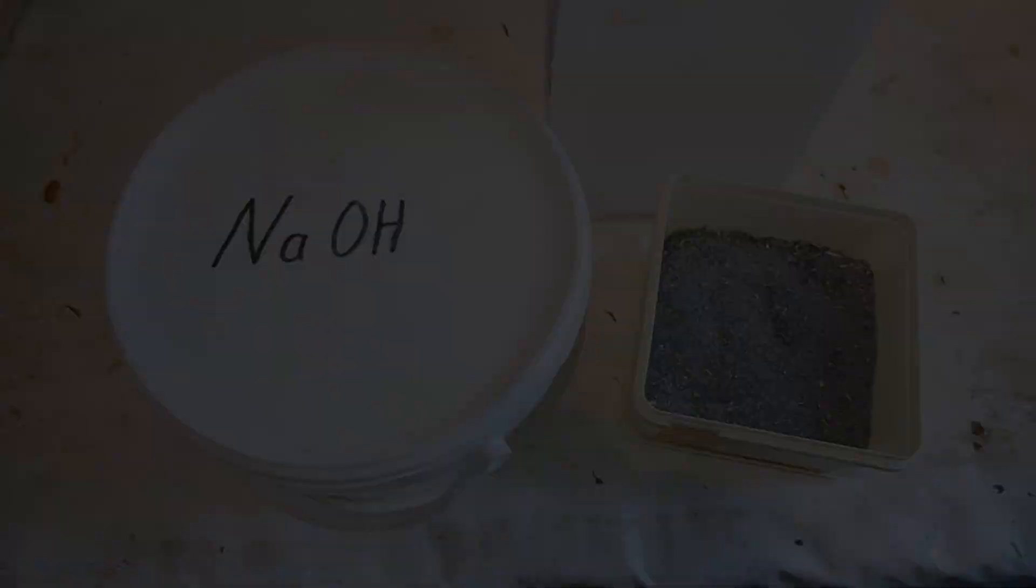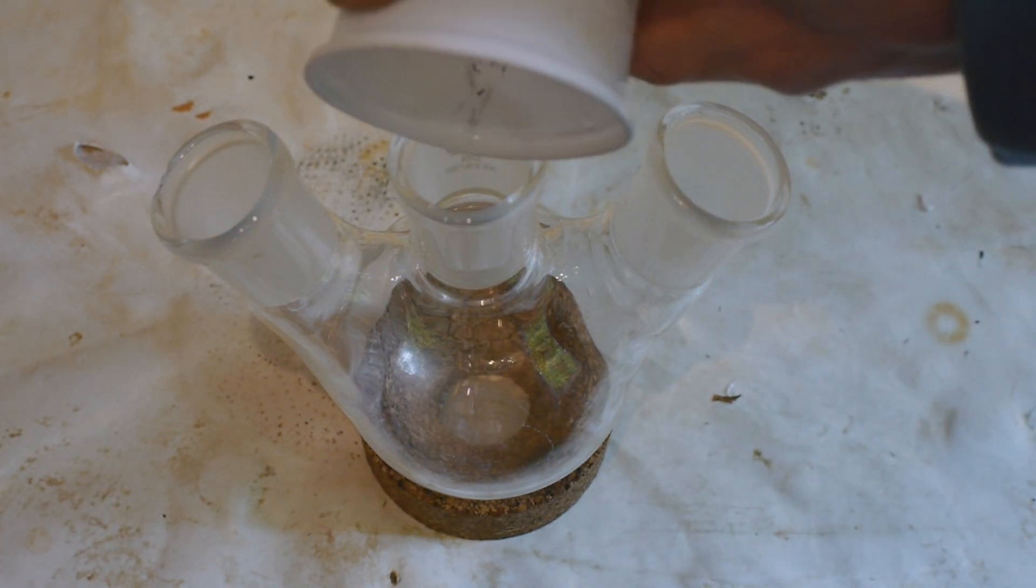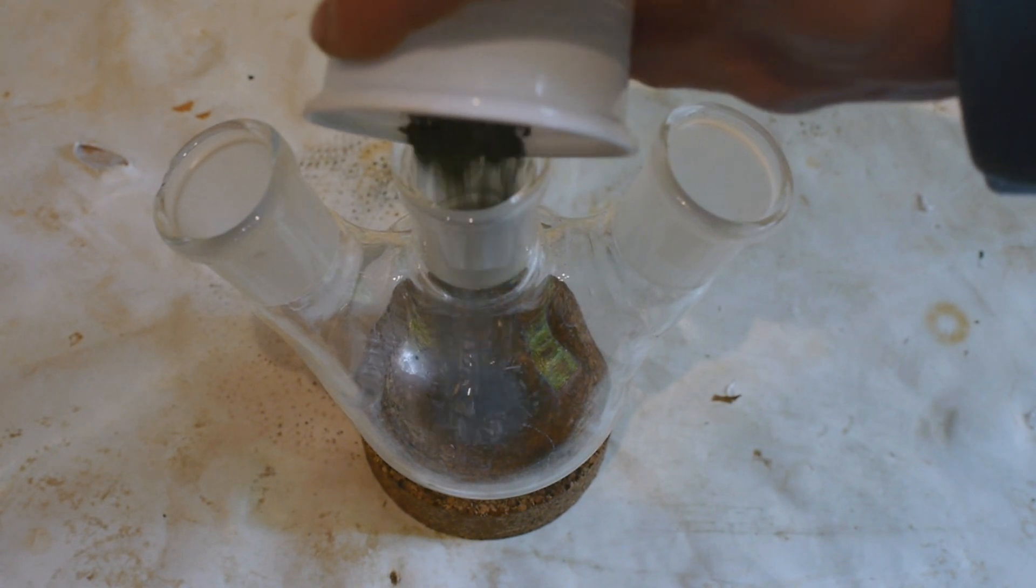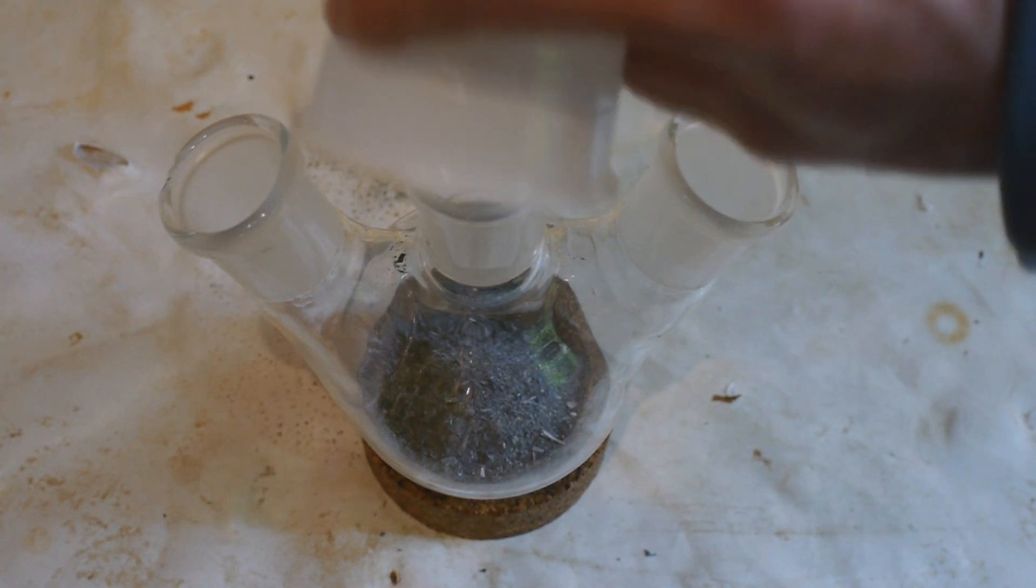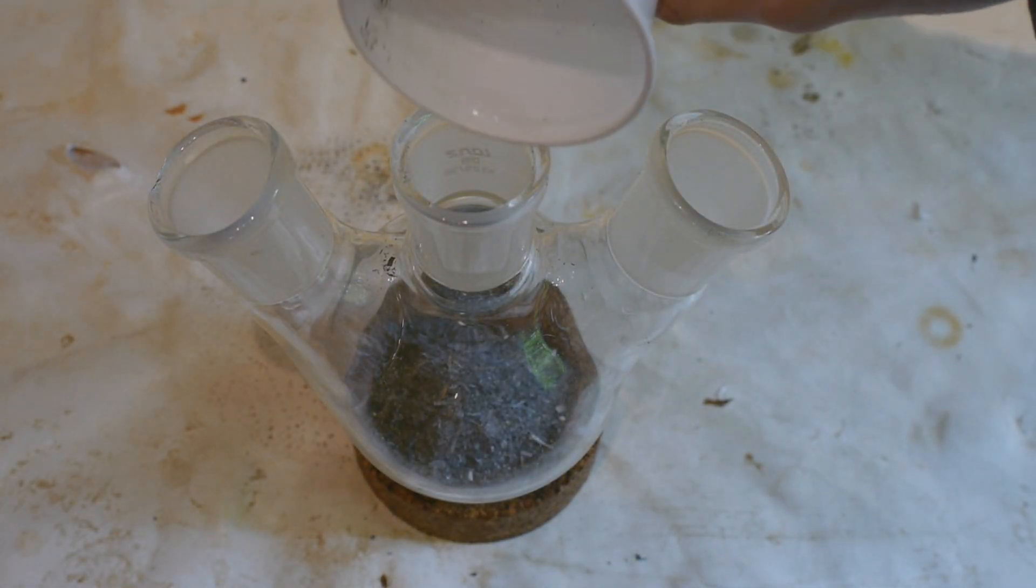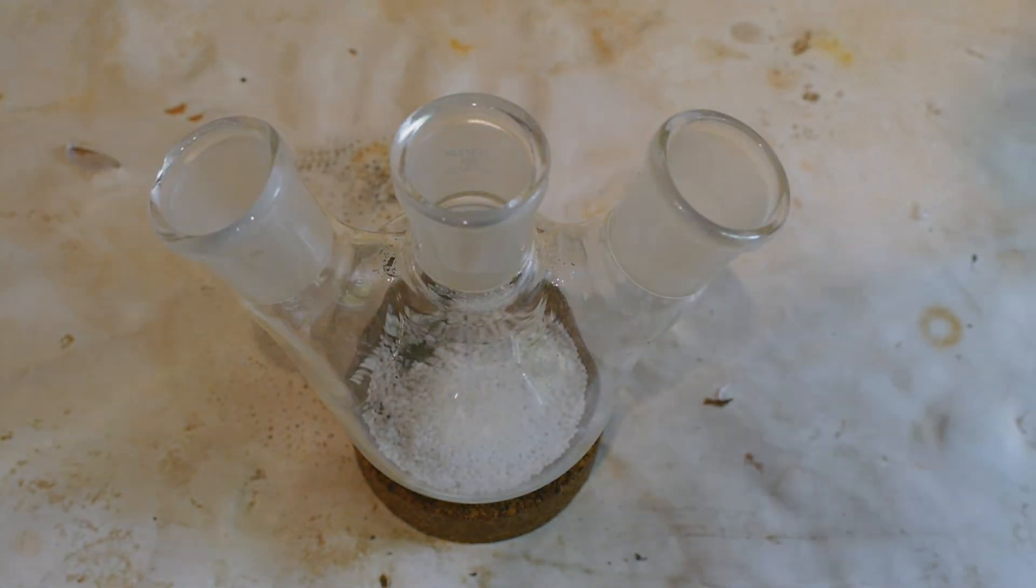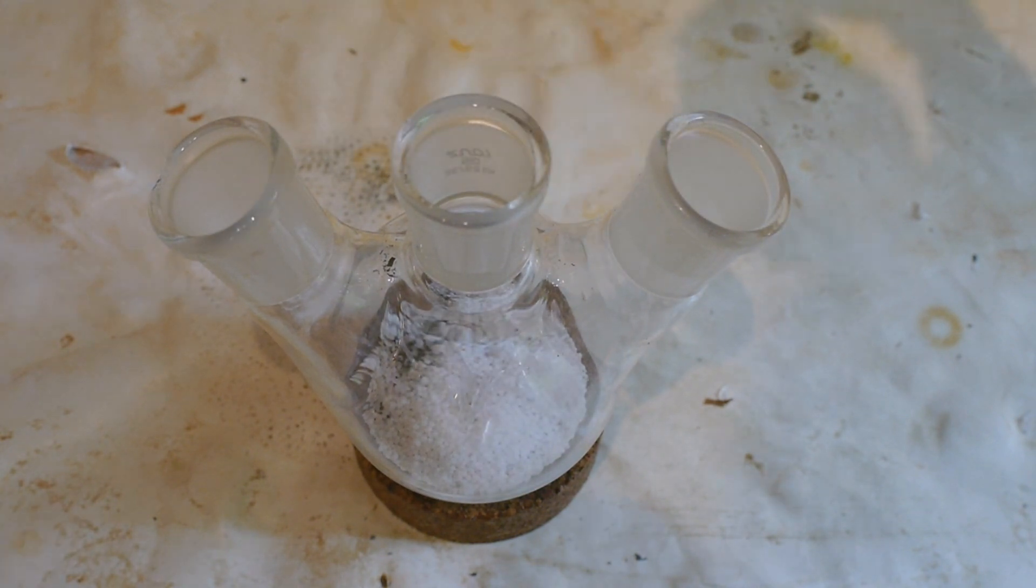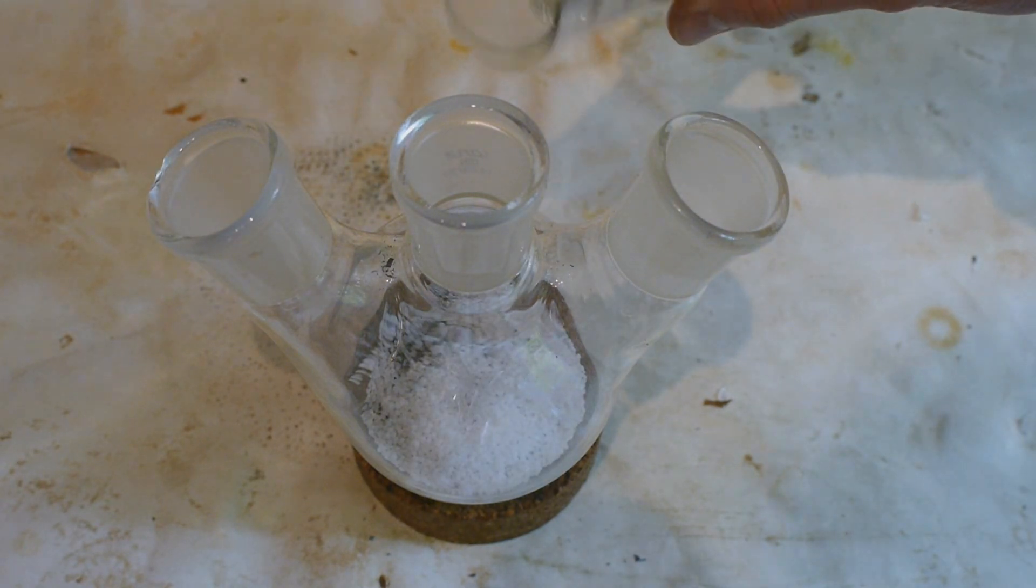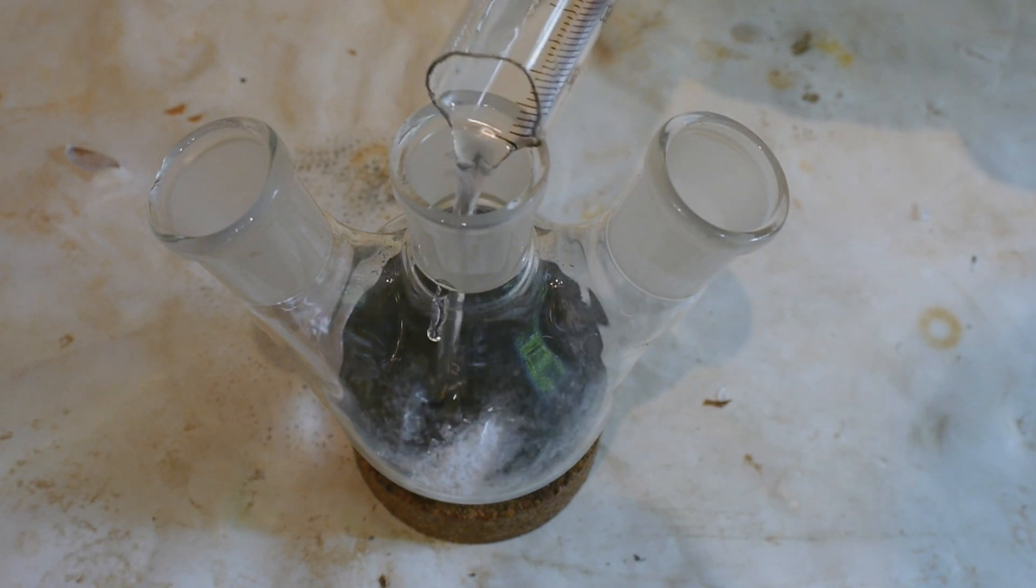As a reaction vessel, I'll be using this three-necked round-bottom flask which has a volume of 250 milliliters. Let's start by charging the reagents. First we're going to start with 14 grams of magnesium metal. To this we'll be adding 20 grams of sodium hydroxide. Then we need 1.5 grams of menthol crystals which smell absolutely amazing. As a solvent we'll use 125 milliliters of mineral oil.